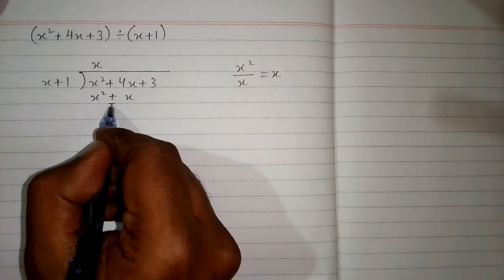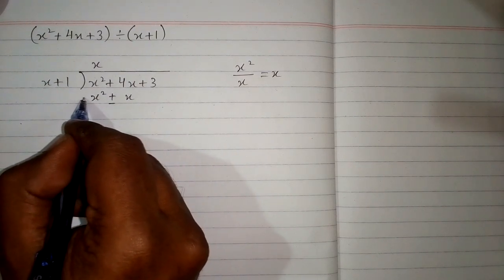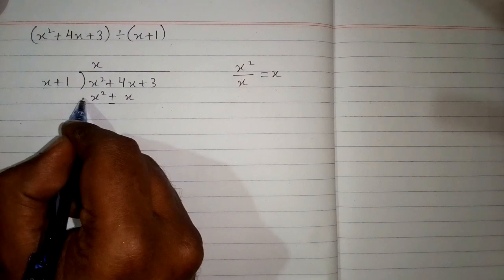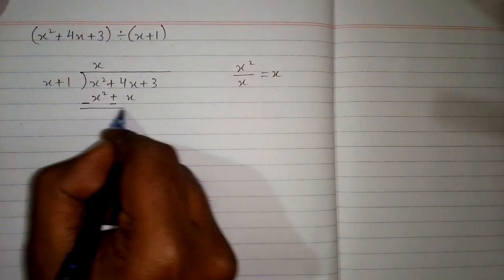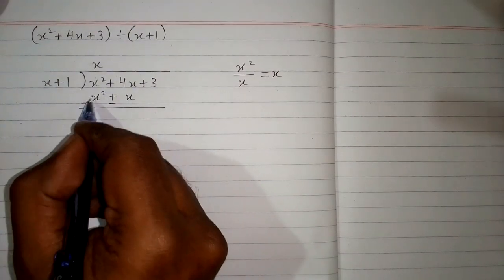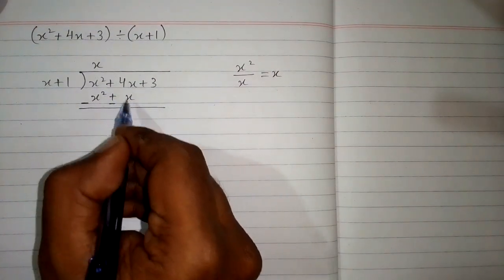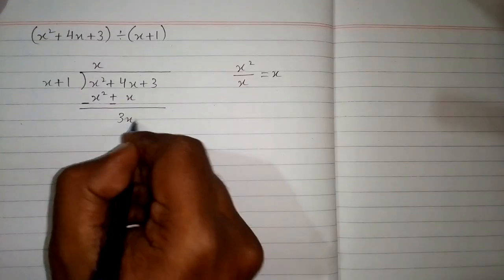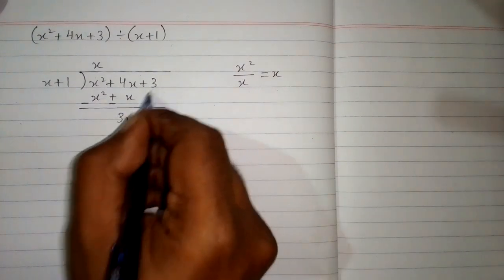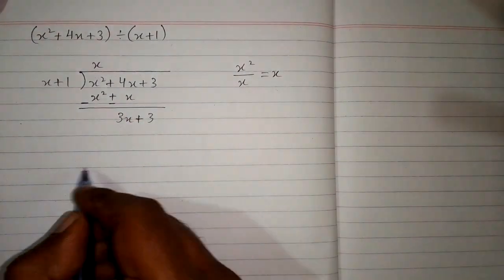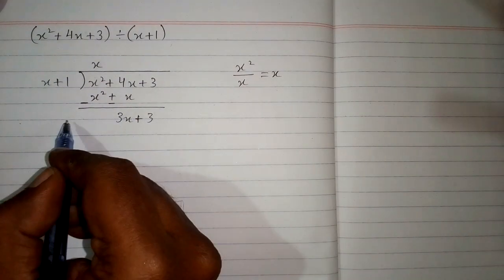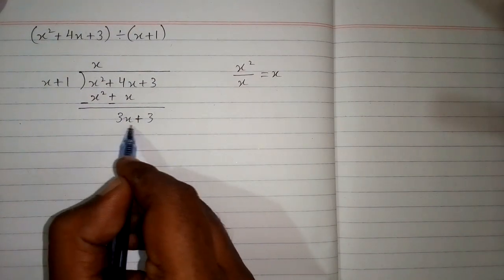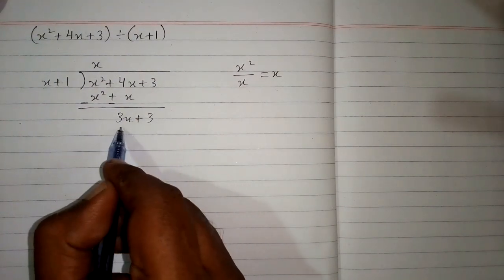Now we will subtract this polynomial. We change the sign of the second polynomial — the plus sign becomes minus, and where there is no sign, that means plus. So minus x squared minus x squared is 0, and 4x minus x is 3x, then we bring down plus 3. So we have 3x plus 3 as the new polynomial.